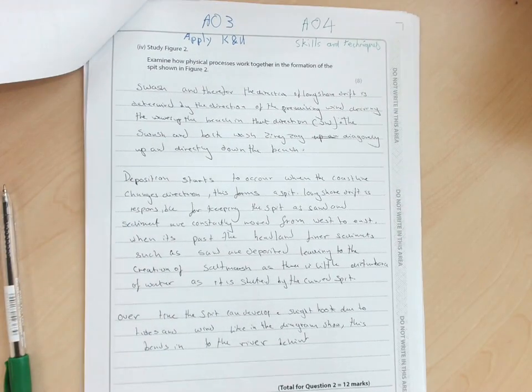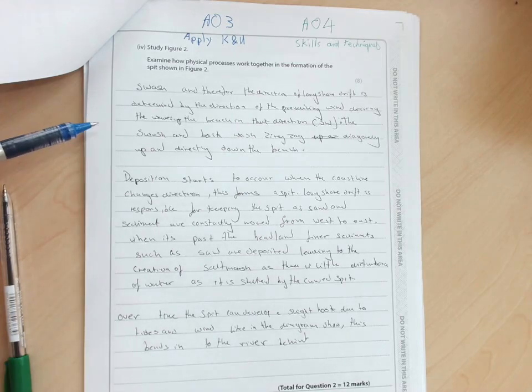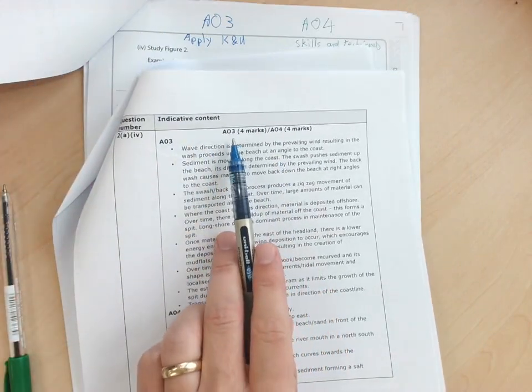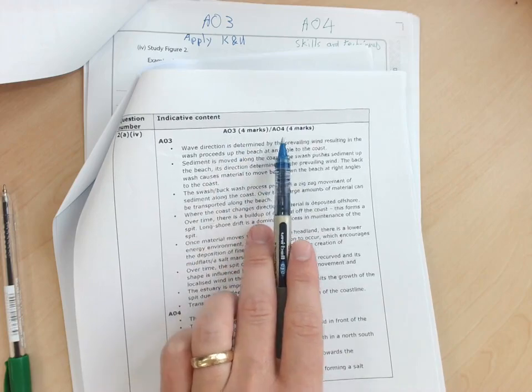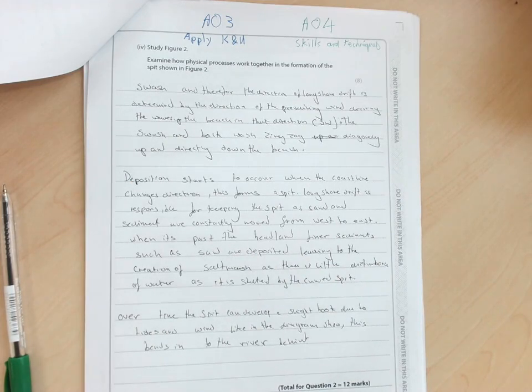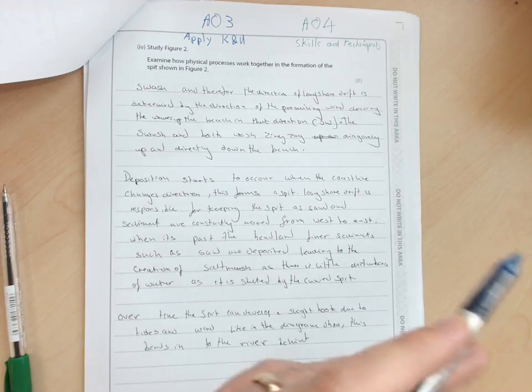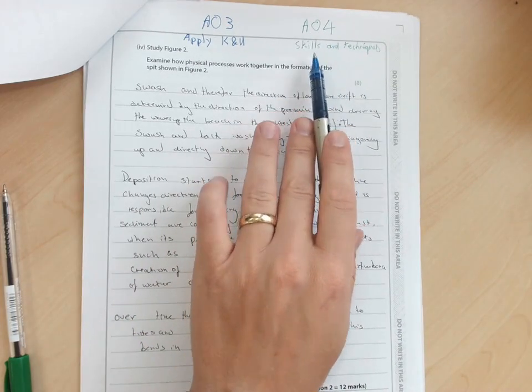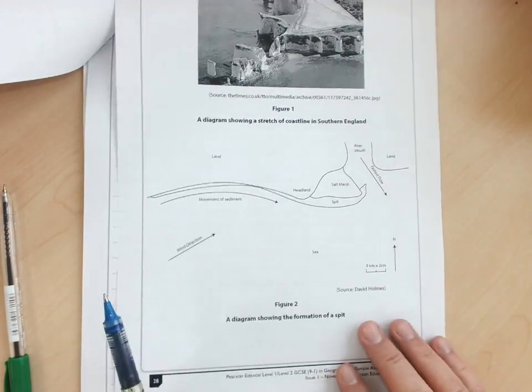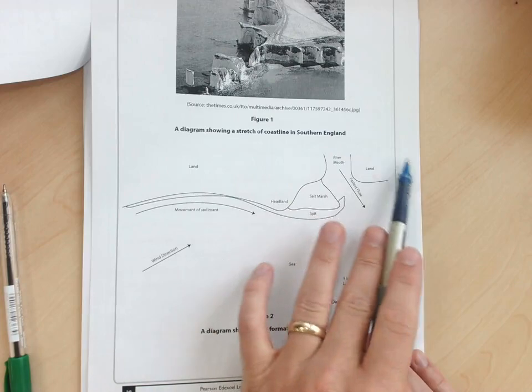Now on the longer answer questions, which are generally the problem and the thing that you're probably concerned about. In this question, as it shows in the mark scheme, you're marked four marks for each of AO3 and AO4. Now AO3 is knowledge and understanding, so that's your ability to apply the things you know to the question, the things that you've learnt in class. Here we've also got AO4, skills and techniques. This is your ability to use the resource. So if we have a look at it, you have to apply your understanding of how geography works to this resource here.